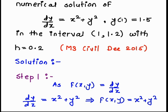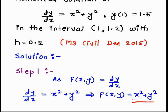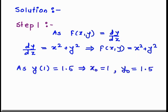Always write Step 1 as the given information. We know that f(x, y) is the expression equal to dy/dx. So here dy/dx = x² + y², meaning the function is x² + y², which we require continuously to calculate function values. It is given that y(1) = 1.5, where 1 is x₀ and 1.5 is y₀ — the initial value. And h = 0.2.